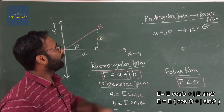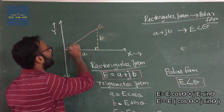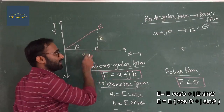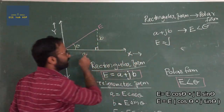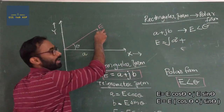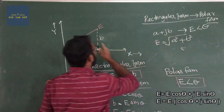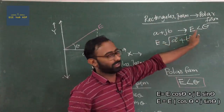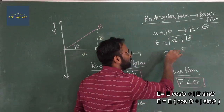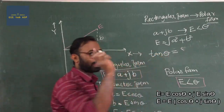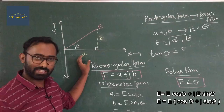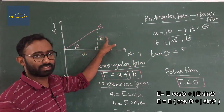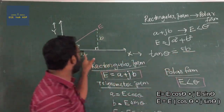Now we are going to write E. E is equal to the square root of A squared plus B squared — root of base squared plus height squared. Then we write E and the theta angle. Theta is equal to tan inverse — tan theta is the opposite side divided by the adjacent side.